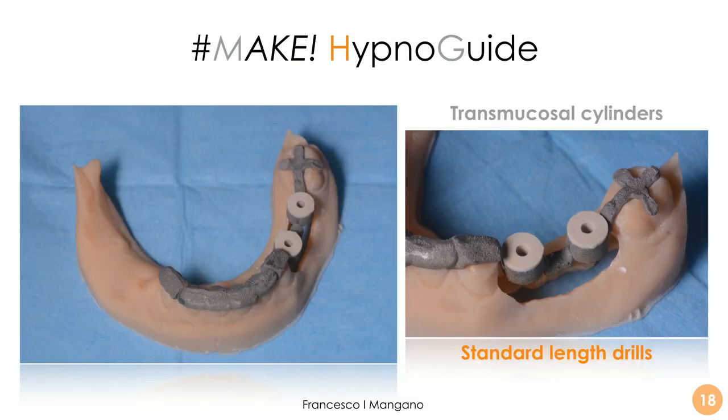It is very important to check the adaptation and stability of the guide on the model before surgery. The model is open because we decided to proceed with open flap surgery. One of the main limitations of conventional guided surgery is that it is almost impossible to work open flap — you are forced to work flapless. But working flapless sacrifices a lot of keratinized mucosa, which is really important as a sort of insurance for the long-term survival and success of our implants.